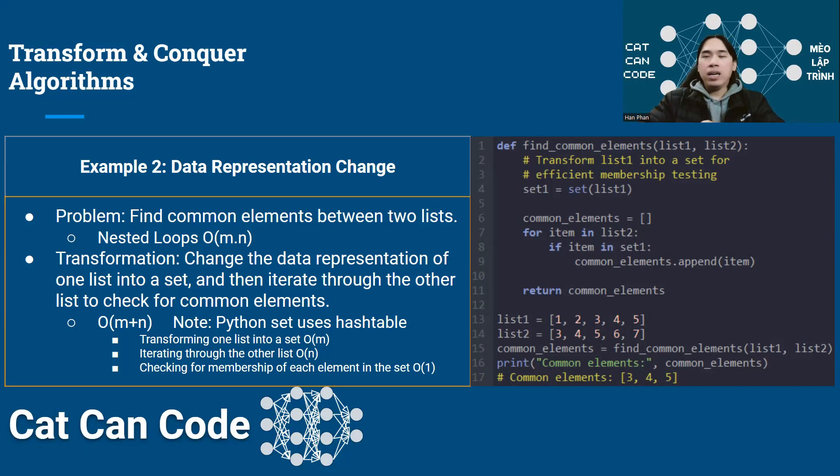The problem here is finding common elements between two input lists. If you write a simple algorithm for these two lists without doing anything, you can write a nested loop. One outer loop goes through all the elements of the first list, and then one inner loop going through all the elements of the second list. For each element in the first list, you compare it to all the elements in the second list. The complexity of this algorithm is O(M times N), where M is the number of elements of the first list and N is the number of elements of the second list. It's roughly equivalent to O(N squared) polynomial time.